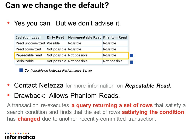Can we change the default? Yes you can, but we don't advise it. Netezza supports two different isolation levels: serializable, which is the default, and repeatable read. One of the drawbacks of repeatable read is that it allows phantom reads — you could run a query more than once and get a different result if somebody else had changed the data. Serializable protects against that. If you're curious about repeatable read, one advantage is that if you're updating the same table, it does allow it as long as you're not updating the same data. Give Netezza a call and get their feedback — some have used this with some success.